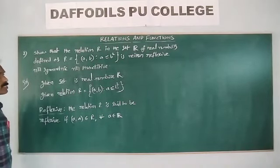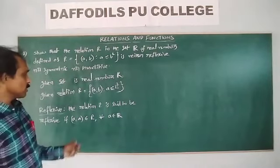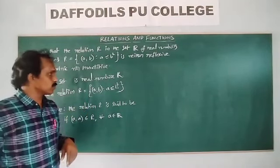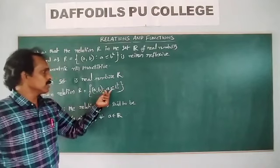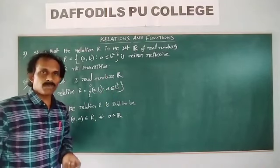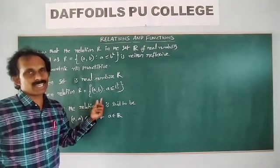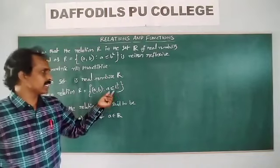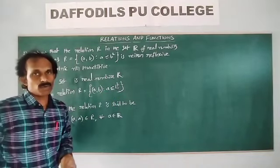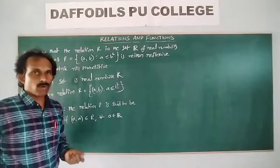Consider any element. Suppose if you take a = 1/2. That implies we check 1/2 ≤ (1/2)², meaning 1/2 less than or equal to 1/4. Is it true or not?